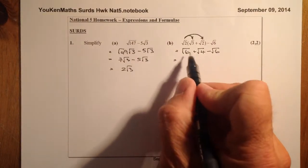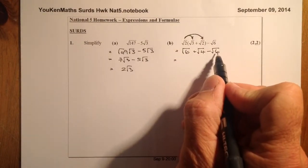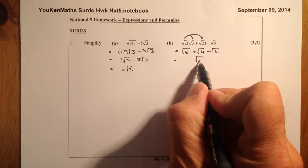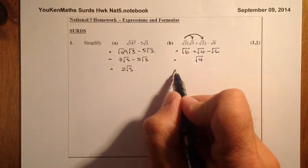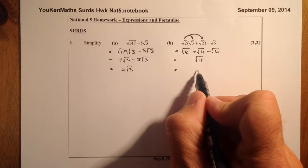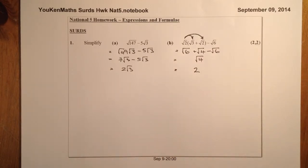Now, if I look at what I've got here, I've got root 6 take away root 6. So these will disappear, and all I've got left here is root 4. And I know the answer for root 4, the square root of 4, is just 2. So that would be my final answer there.